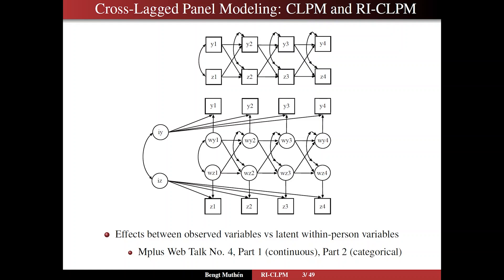On slide 3 we see two very commonly used models for cross-lagged panel data analysis: the CLPM and the RI-CLPM. At the top we have the traditional CLPM. We have two variables, Y and Z, going forward in time. This is four time points, and we look at the cross-lagged effects between the observed variables across time.